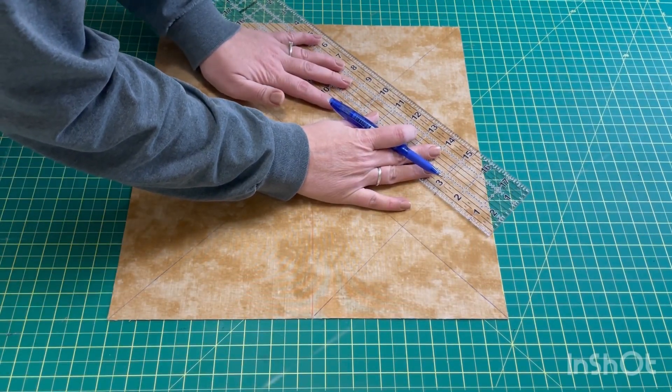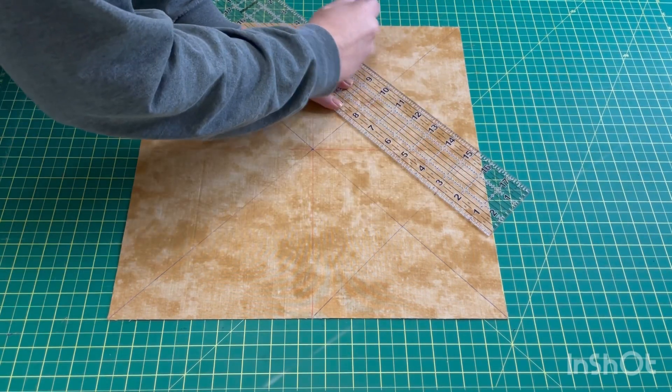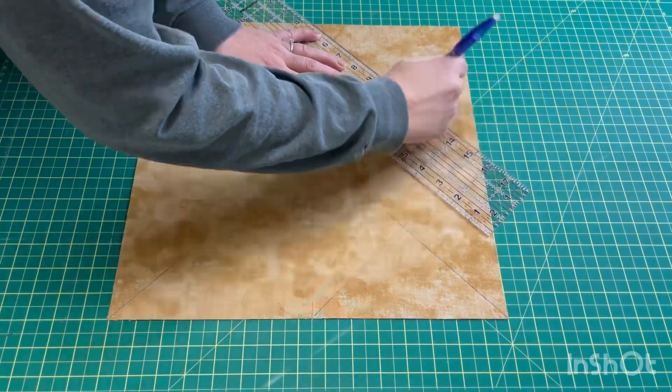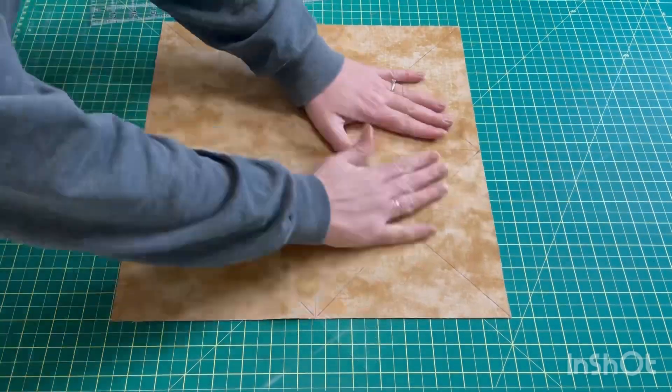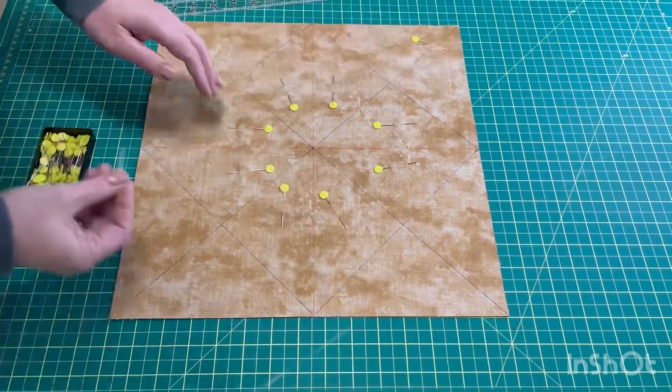On the blue lines we are going to be sewing a quarter inch on each side of the line. On the red lines we will not be sewing anything, those are just our cut lines. I'm going to be pinning it quite a bit because I don't want this to shift around while I'm sewing it.